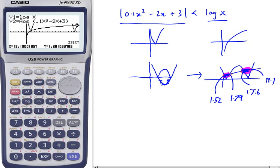So clearly we have the regions where this inequality holds: x greater than 1.52 and less than 1.79, and x greater than 17.6 and less than 19.1. There's your answer for that question.